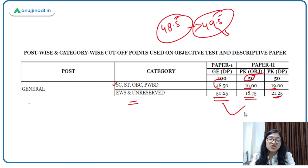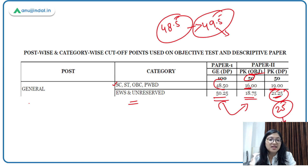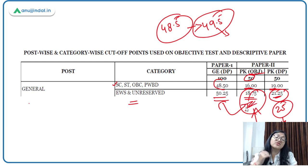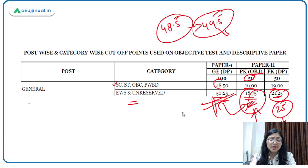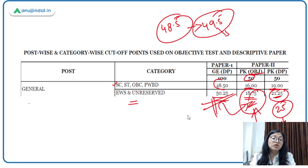Depending on your strength and weakness, you should prioritize which areas to focus on. If your descriptive is not good and you think you won't get more than 25 marks there, give more priority to the objective. Also, if you start writing an essay weekly on topics that are in the news, you will practice and can easily get good marks in English description. Starting preparation now will give you a greater chance of getting good marks and clearing this exam.